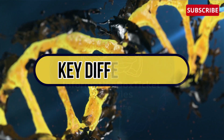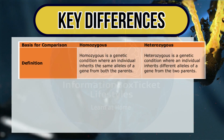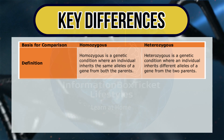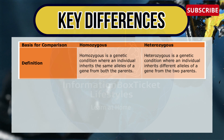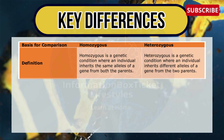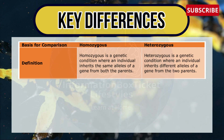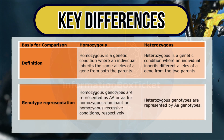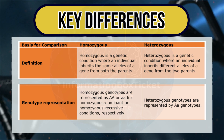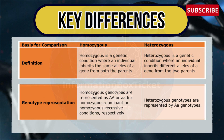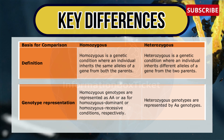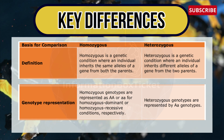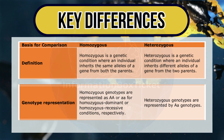Let's see the key differences between heterozygous and homozygous. First, definition: homozygous is a genetic condition where an individual inherits the same alleles of the gene from both parents, whereas heterozygous is where an individual inherits different alleles from both parents. Regarding genotype representation, homozygous genotypes are represented as AA (capital) or aa (small) for homozygous dominant or homozygous recessive conditions respectively, whereas heterozygous genotypes are represented by Aa.